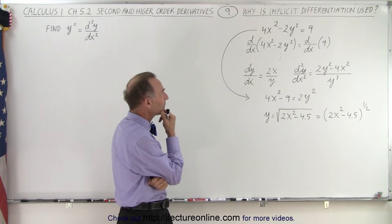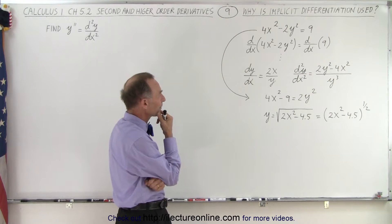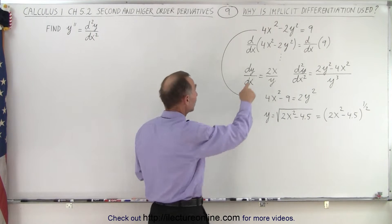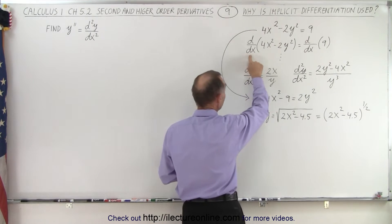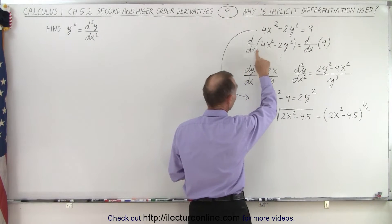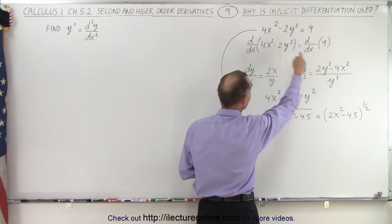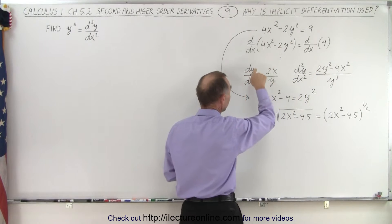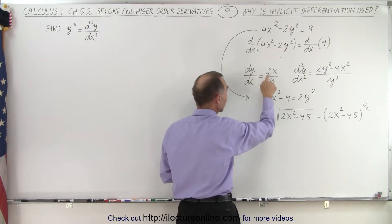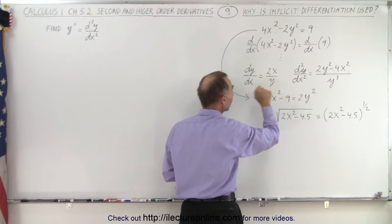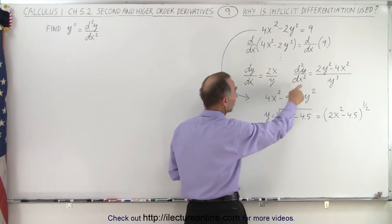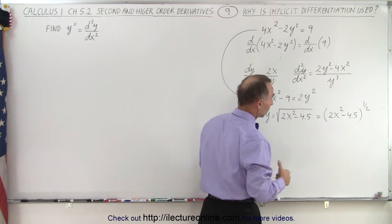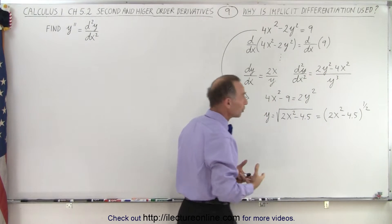So how did we do that? Well, we took the d/dx — we took the first derivative with respect to x of both sides of the equation, and then we worked it through. We ended up with dy/dx being 2x over y, and then we found the second derivative being 2y squared minus 4x squared over y cubed.